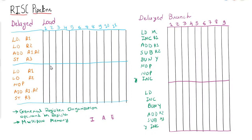In RISC pipeline there are two problems: delayed load and delayed branch. For delayed branch, we discussed that higher-level compilers rearrange instructions to efficiently use the pipeline. For delayed load, we discussed how to resolve data dependency. We will try to discuss both of these.